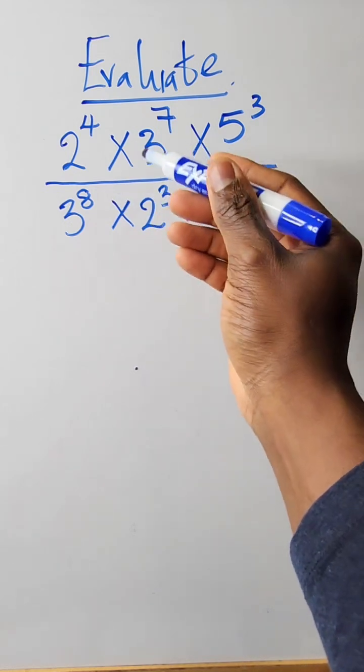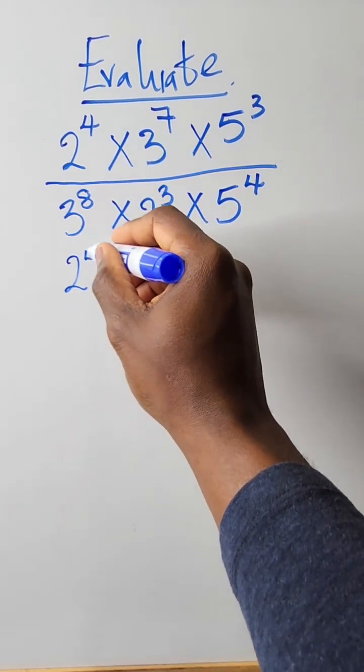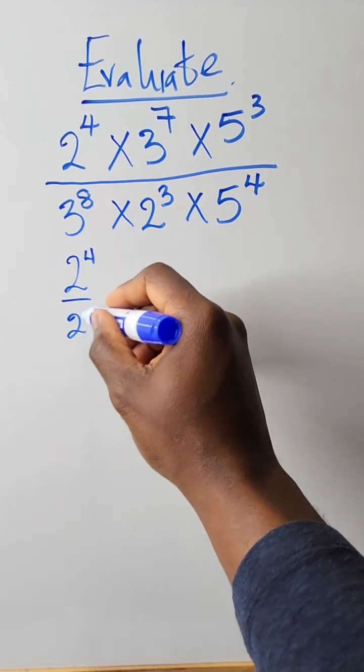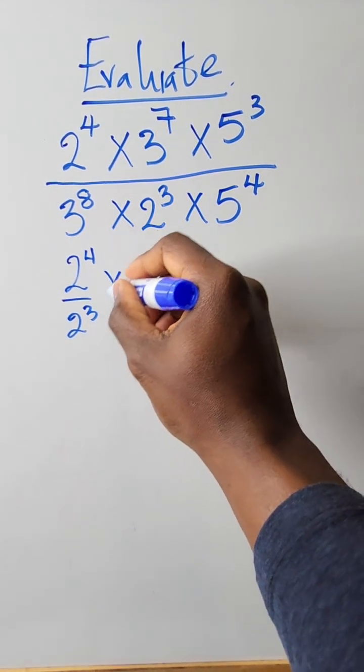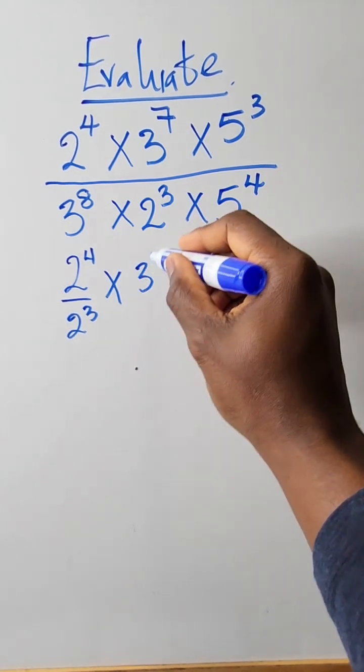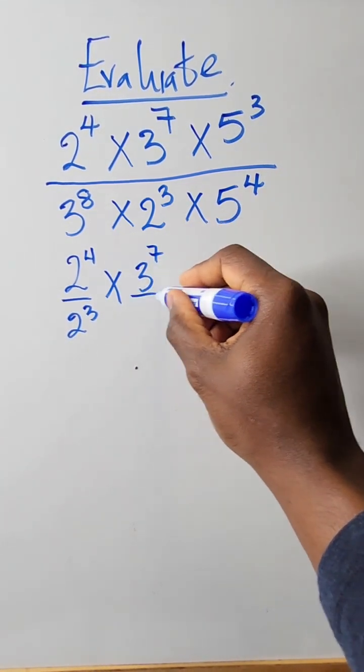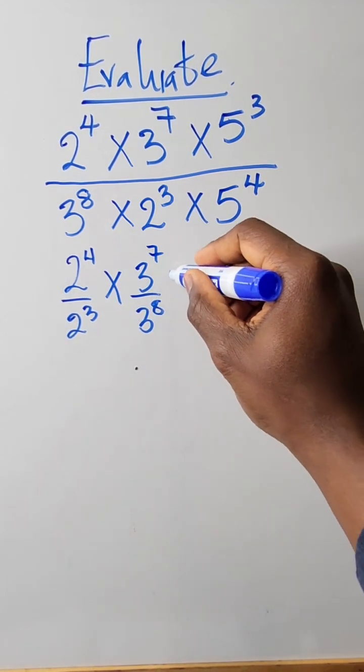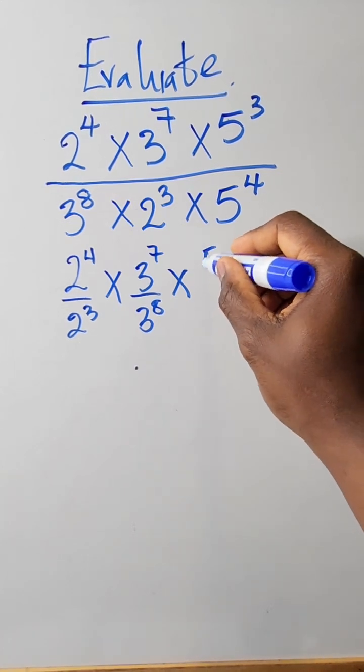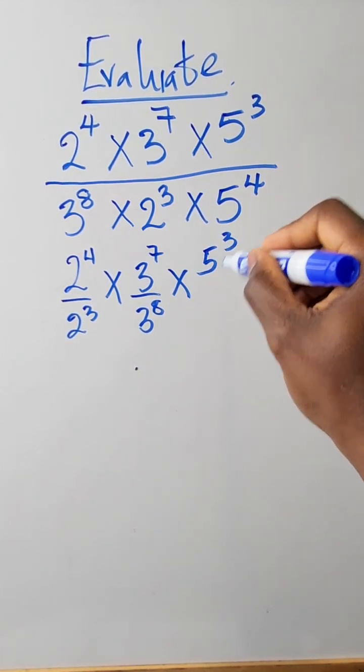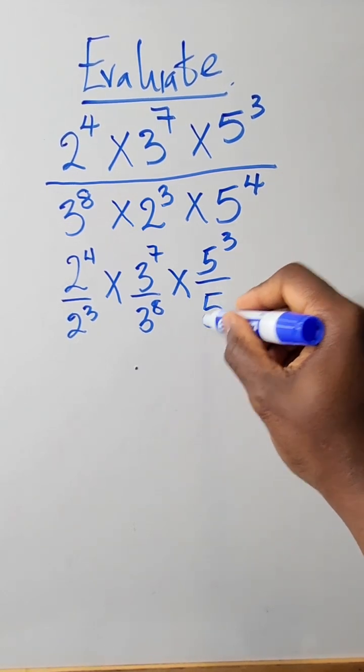So this also can become 2 raised to power 4 divided by 2 raised to power 3 times 3 raised to power 7 divided by 3 raised to power 8 times 5 raised to power 3 divided by 5 raised to power 4.